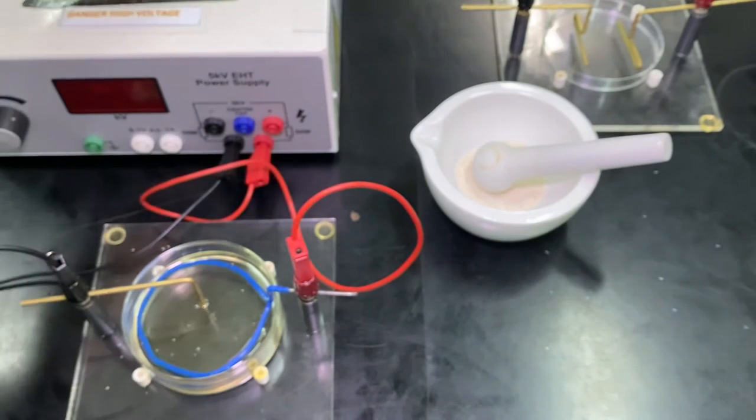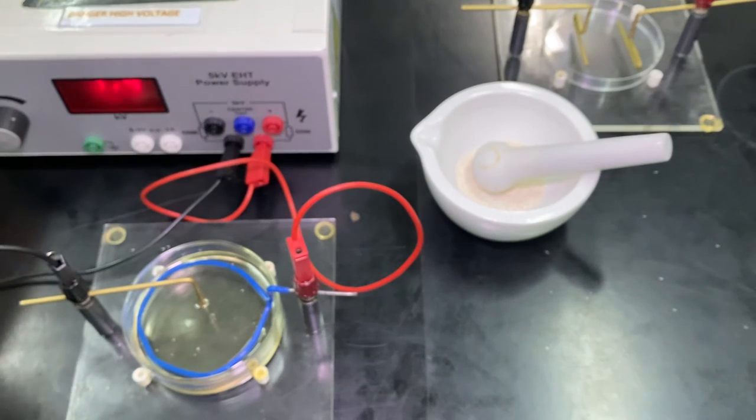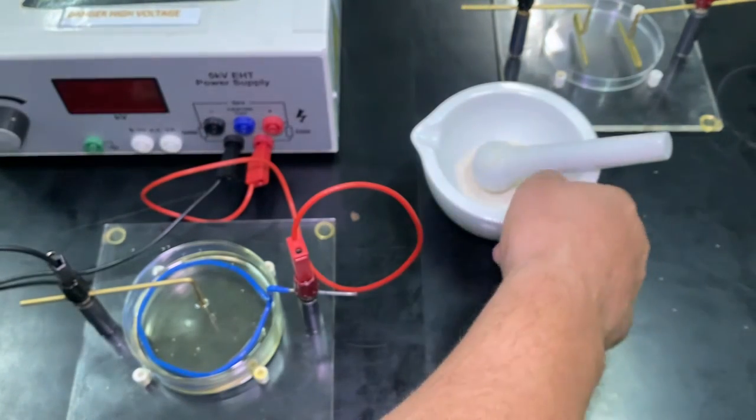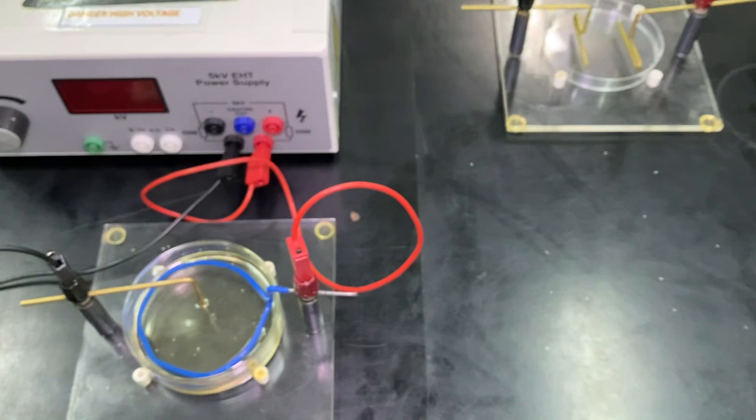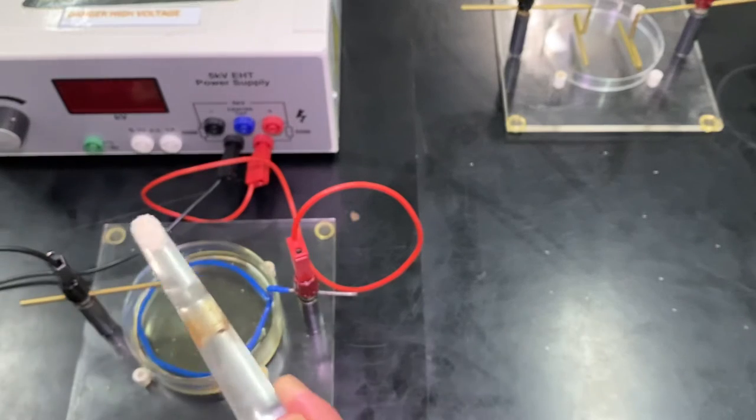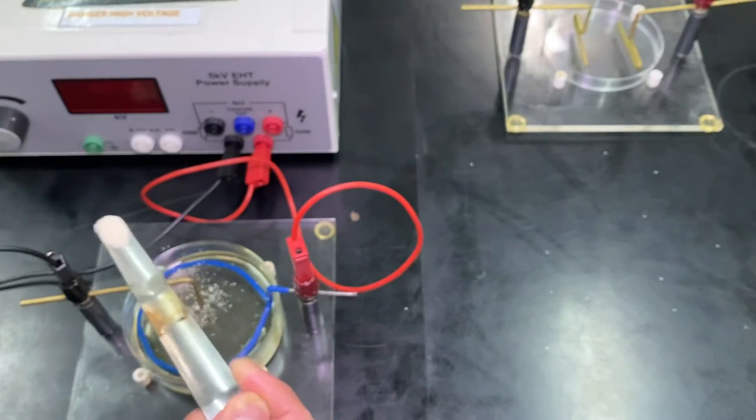Now, when we're ready, I'm going to sprinkle in the—not the iron filings—I'm going to sprinkle in the semolina. So this is playing the role of the iron filings. We literally just sprinkle that over the top.